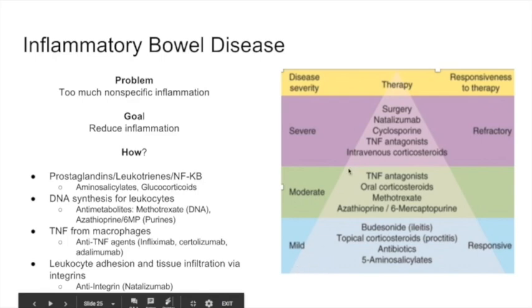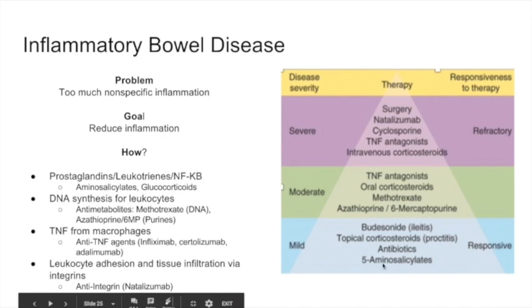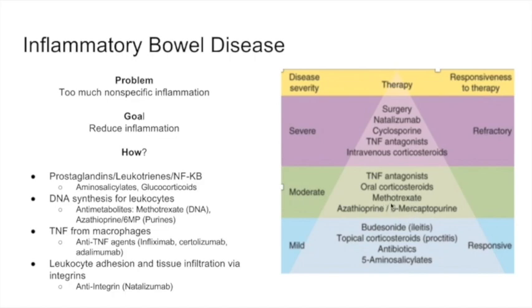This slide shows the stepwise approach to inflammatory bowel disease from mild to moderate to severe. Mild disease starts with aminosalicylates and glucocorticoids — for example, budesonide, topical corticosteroids, antibiotics if there's infection, and aminosalicylates. For moderate disease, you kick it up a notch: use anti-metabolites like azathioprine, 6-mercaptopurine, or methotrexate, or oral corticosteroids — moving from topical to oral — and TNF antagonists.